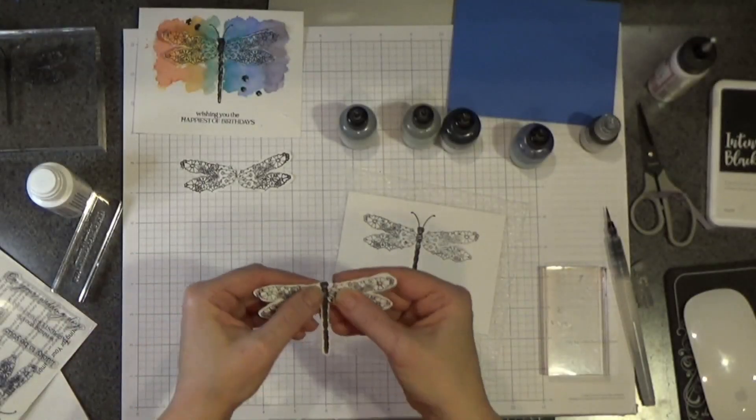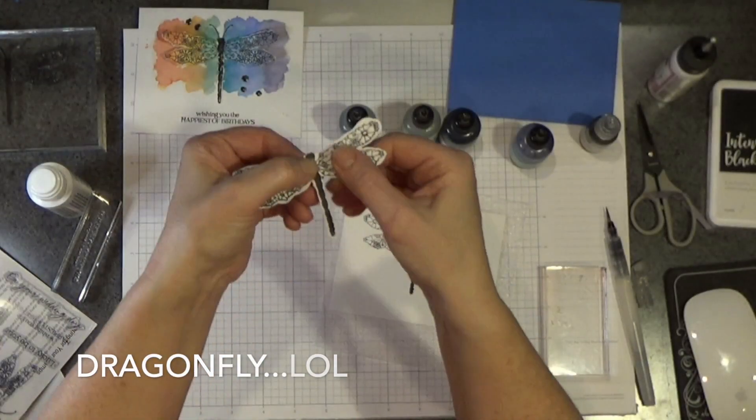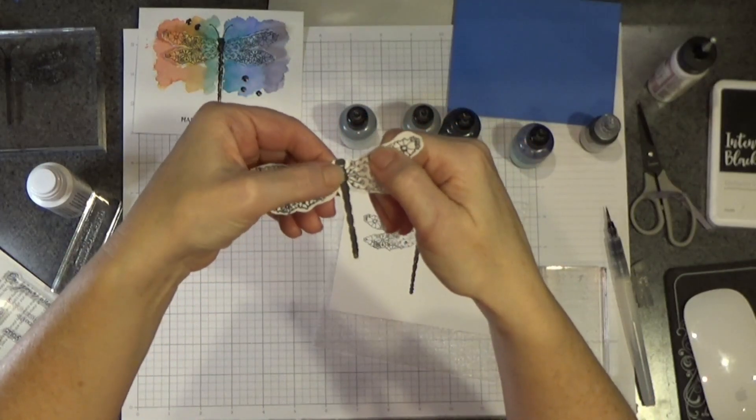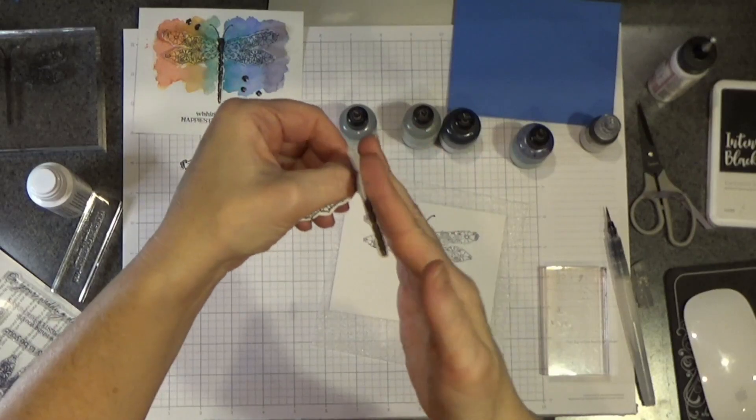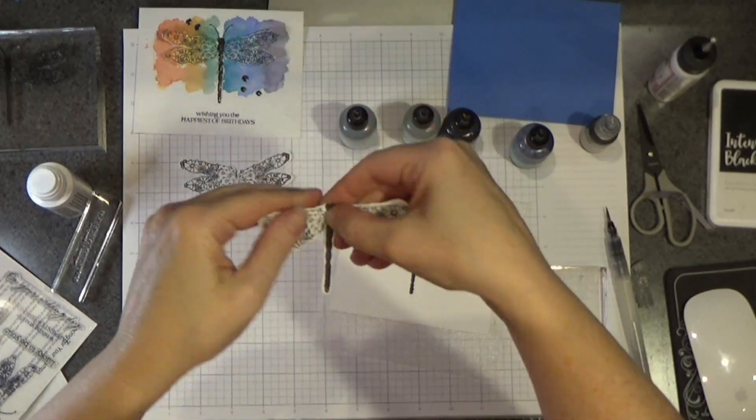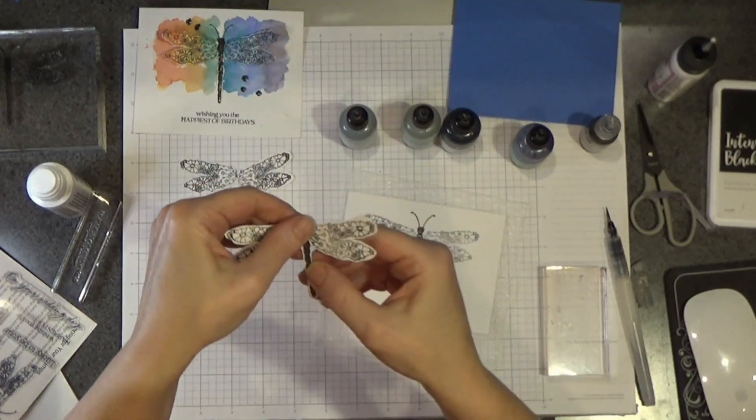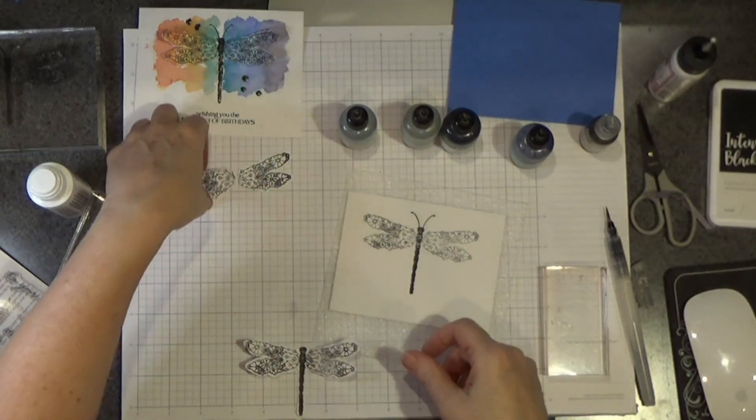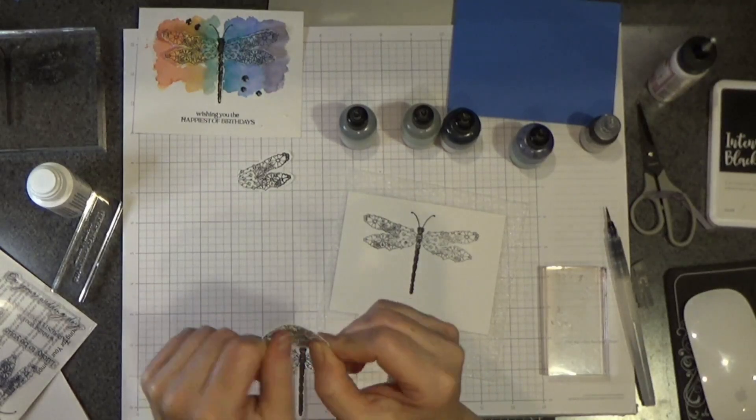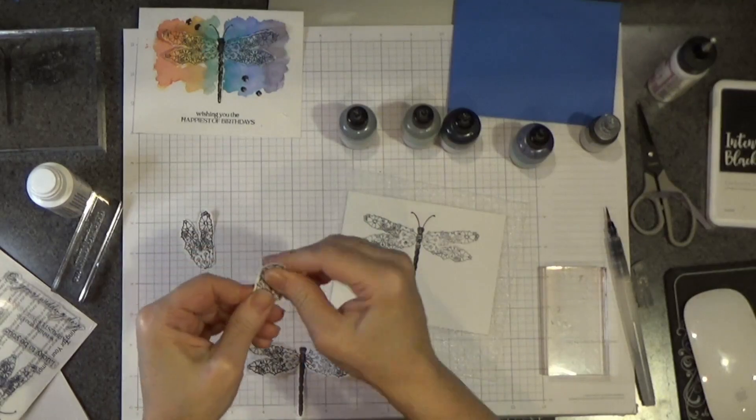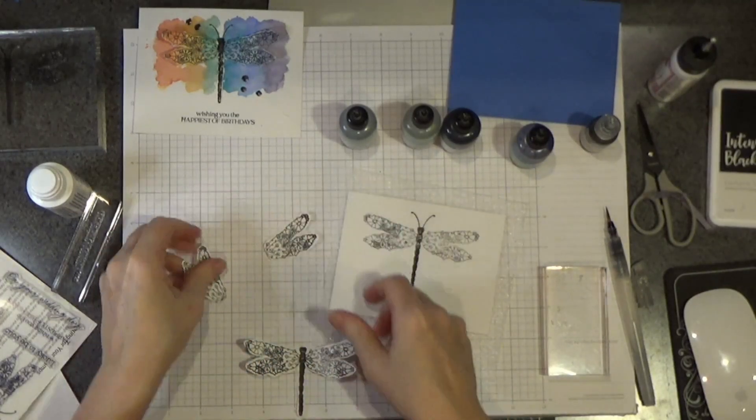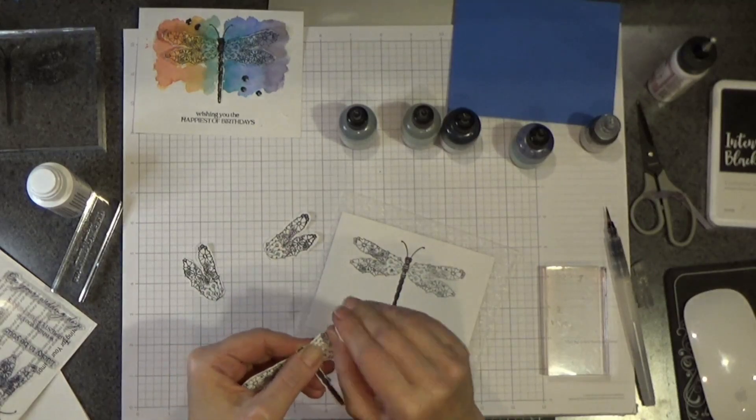So we've got our dragonflies and I'm bending. I've got my thumb here where the body is and where the wing meets and I'm bending that up. I'm going to do that on both sides because I want to give this a little texture. And then we have these and I am wiggling them a little bit, bending them, moving that paper a little bit to give it some texture.